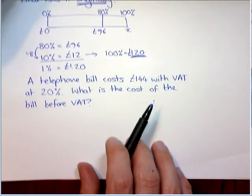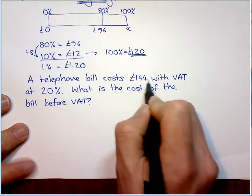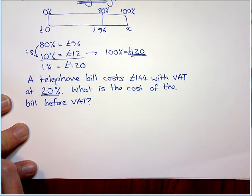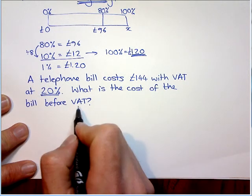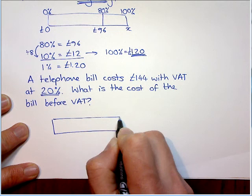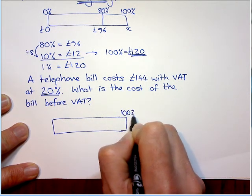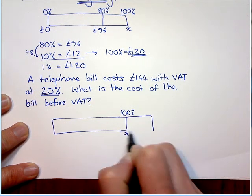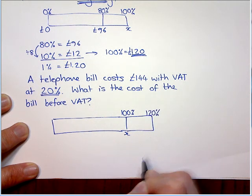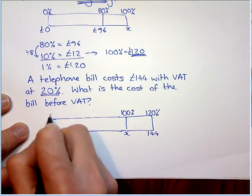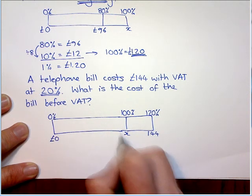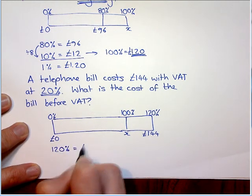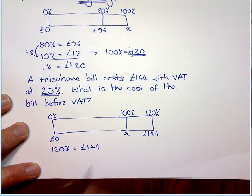So this next one: we have a telephone bill, and it costs £144 with VAT added on, which at the current rate is 20%. What is the cost of the bill before VAT? What's actually happened here is 100% is the original, which is what we don't know. It's the original cost before something changed, but now we've had 20% added on, so we know that is £144. Our fact to write down is: 120% is worth £144.